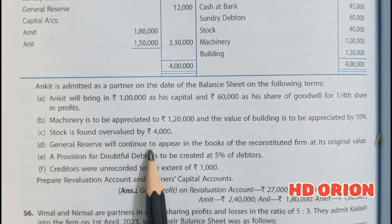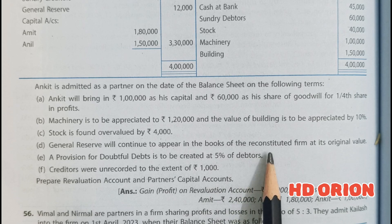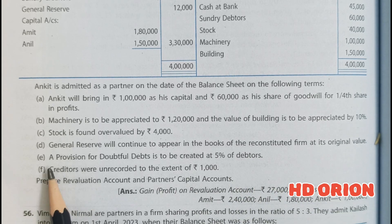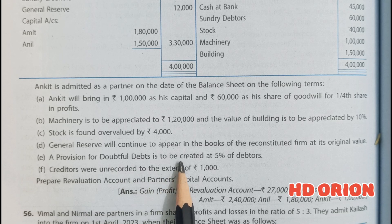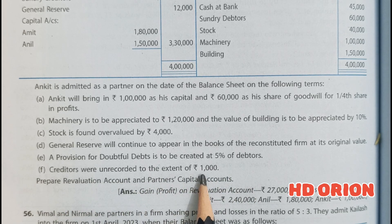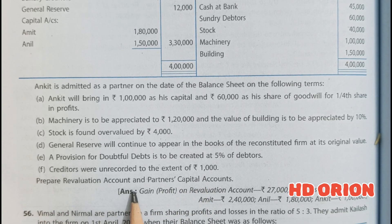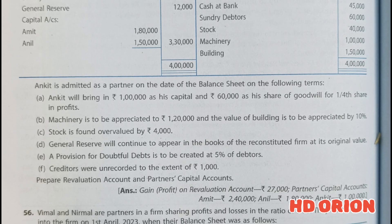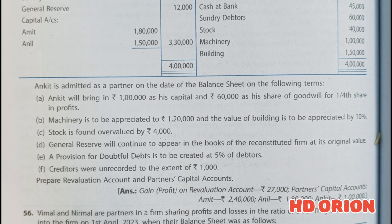General reserve will continue to appear in the books of the reconstituted firm in its original value. A provision for doubtful debts is to be created at 5% on debtors. Creditors were unrecorded to the extent of rupees 1,000. Prepare revaluation account and partners capital accounts. Let us see the explanation of it in the solution.